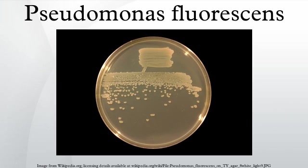P. fluorescens demonstrates hemolytic activity and, as a result, has been known to infect blood transfusions. It is also used in milk to make yogurt. Related United States Patents include 6,489,358; 4,873,012; and 6,156,792.